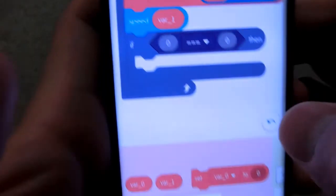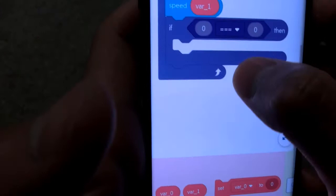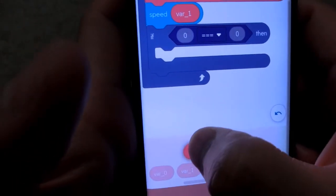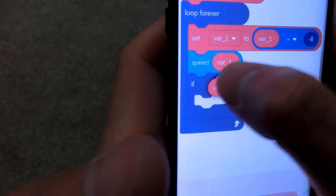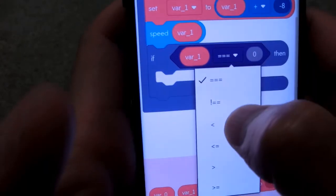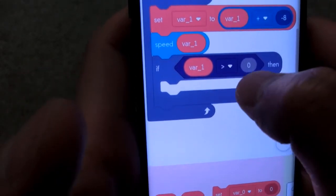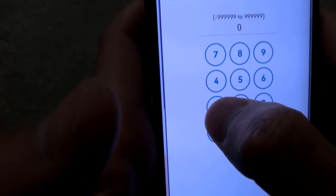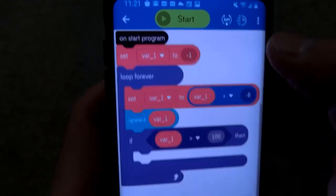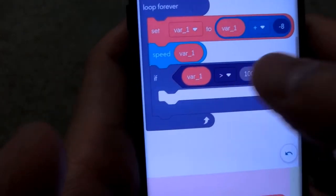Where's my variable 1? Okay, I put variable 1 over here. So if variable 1 is larger than 100, then what? Then stop the robot.